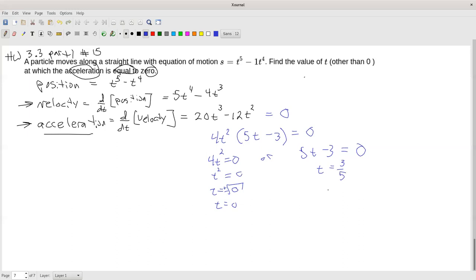So I get 2 times for which the acceleration of the thing moving in that pattern is 0. It's not accelerating at the beginning, and it's not accelerating 3 fifths of a second later.